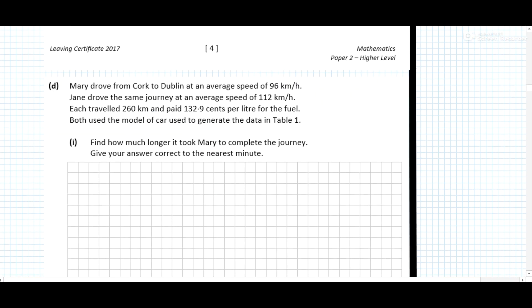Mary drove from Cork to Dublin at an average speed of 96 kilometers per hour. Jane drove the same journey at an average speed of 112 kilometers per hour. Each traveled 260 kilometers and paid 132.9 cent per liter for the fuel. Both used the model of car used to generate the data in table one. So again, just to remind yourself, we have distance, speed, time.